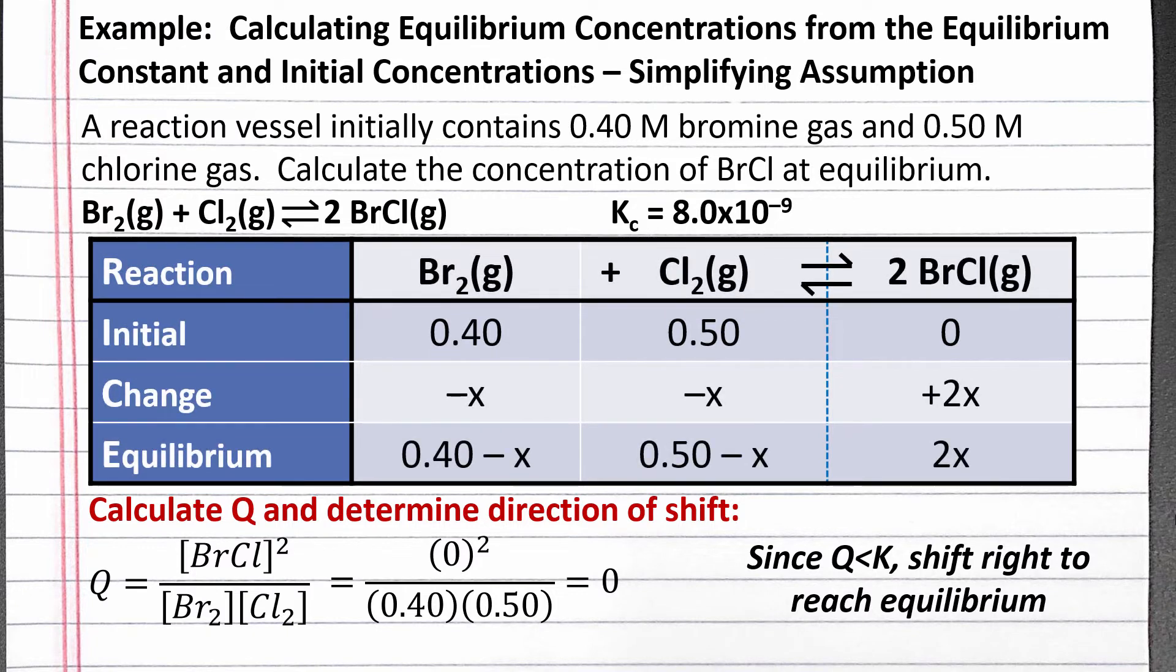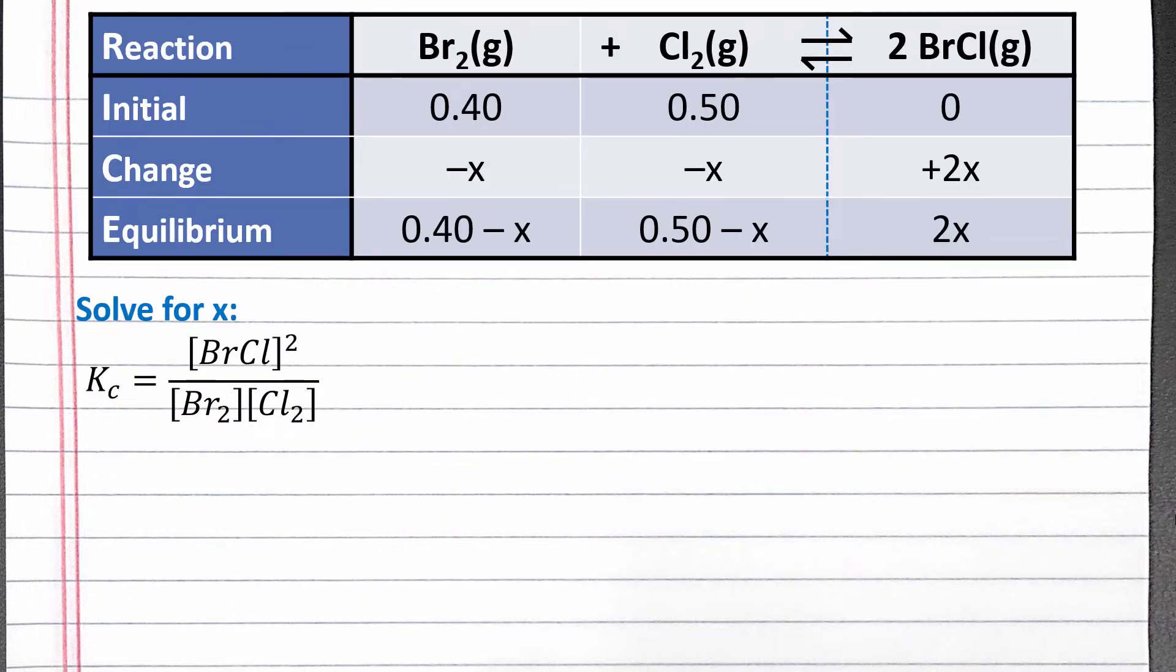This means we will have minus x, minus x, and plus 2x for our change row. The coefficients 1, 1, and 2 come from the coefficients in the balanced chemical equation. The equilibrium row is the initial row plus the change row. Now we need to solve for x using the equilibrium constant expression. The value of Kc was given in the problem, and we can plug in the equilibrium row of our RICE table for the concentrations.